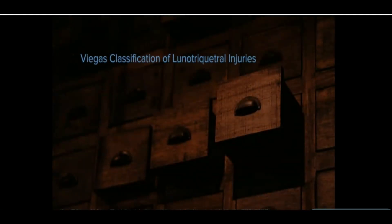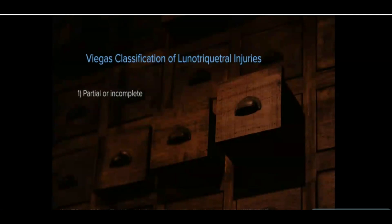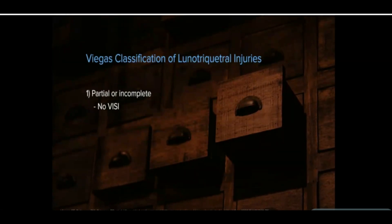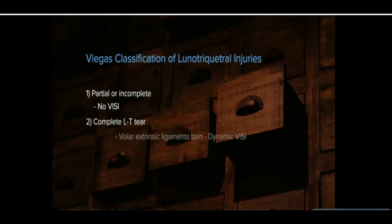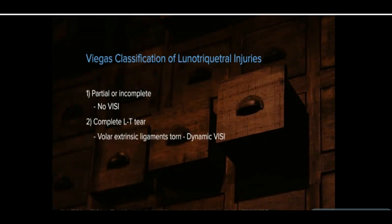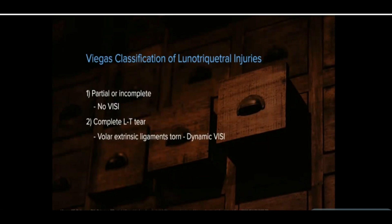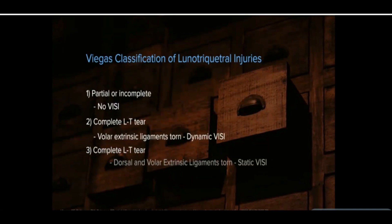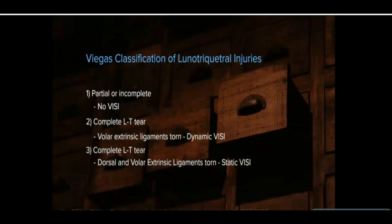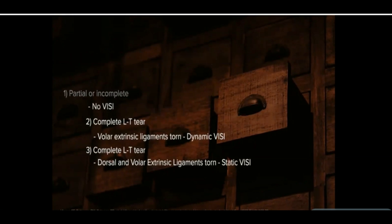Villegas and others classified lunotriquetral ligament injuries into grade 1, partial or incomplete, with no VISI instability pattern; grade 2, complete tear with compromise of the volar portion of the ligament and a dynamic VISI pattern, which is only visible when stress loading the wrist; and grade 3, with complete dorsal and volar ligament tear along with a static VISI pattern, visible on standard unloaded wrist x-rays.